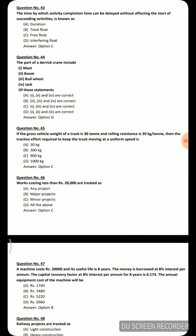Next question: the parts of a derrick crane include — mast, boom, bull wheel, and jack. Which statements are correct? Option A: 1, 2, and 4; option B: 2, 3, and 4; option C: 1, 3, and 4; option D: 1, 2, and 3. The correct answer is option D — 1, 2, and 3 are correct.